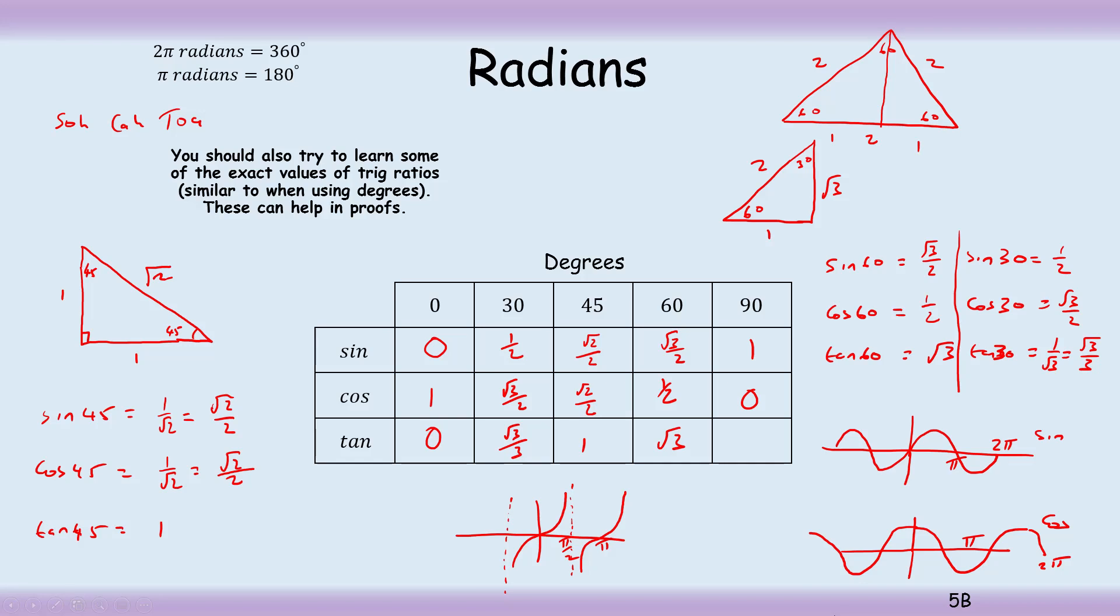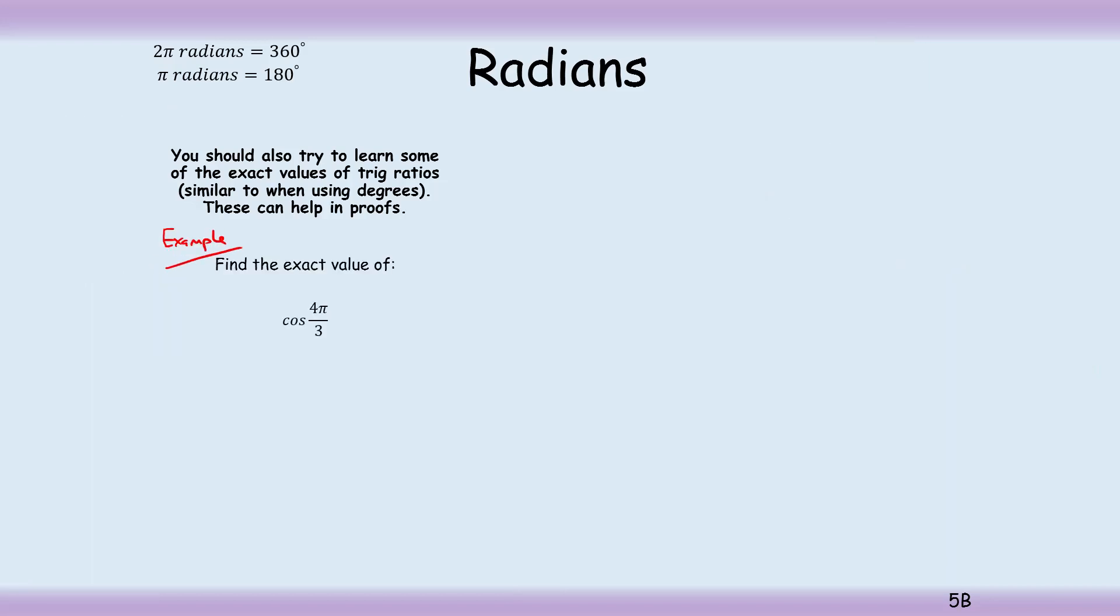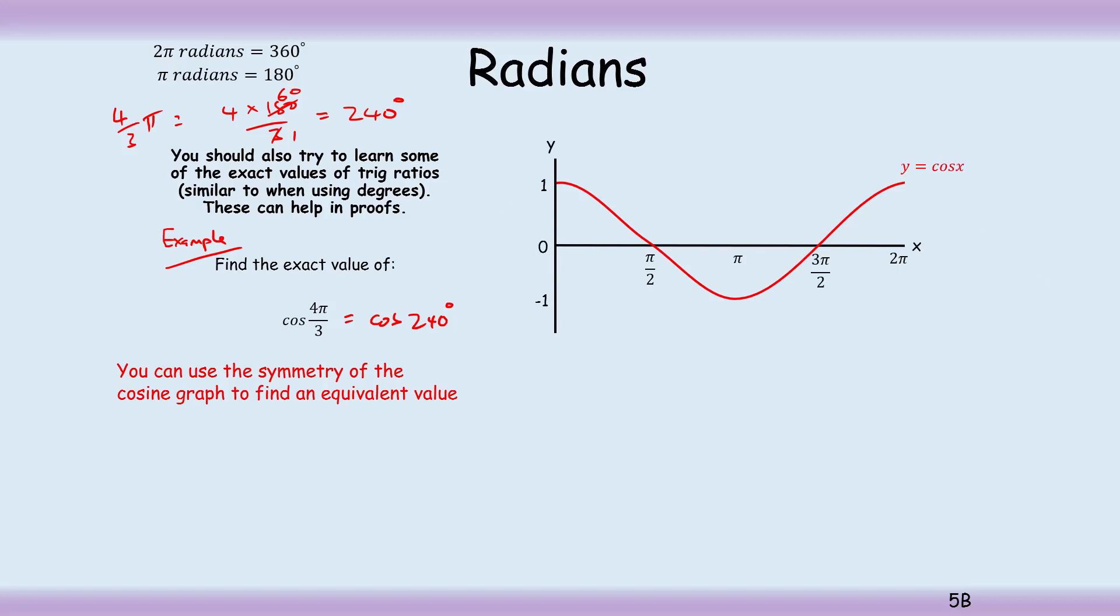Hit pause, make some notes, and when you're ready hit play again. Example: find the exact value of cos 4 pi by 3. So that means not using the calculator, we want to use from our table what we had last time. So 4 pi by 3, what is that in degrees? I often find working in degrees quite useful here. 4 over 3 pi is the same thing as 4 times 180 divided by 3. 3 goes into itself one time and into 180 sixty times, so 4 times 60 is 240 degrees.